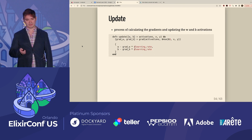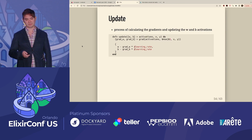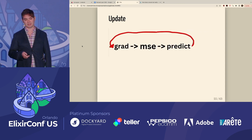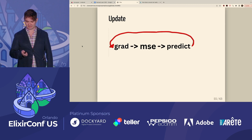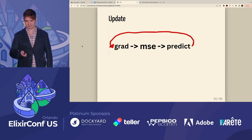The update function is what we use in order to calculate the gradients and update our activation function W and B values. Here it is in a loop: you have the gradient, which calls mean squared error, which makes a prediction, which updates the gradients, and then you do that over and over again, which will eventually fit our function Y equals 2X.